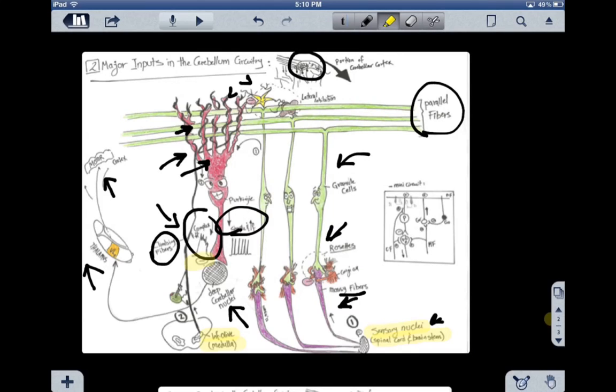We have lateral inhibition, which is between stellate cell and basket cell. This inhibition is called lateral inhibition because it sharpens the excitation in certain areas by suppressing it in another.